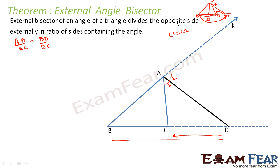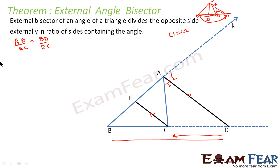In this slide let us focus on the external angle bisector theorem: AB by AC is equal to BD by DC. Triangle ABC has AD as the external angle bisector of angle A. To prove this, we draw EC parallel to AD.